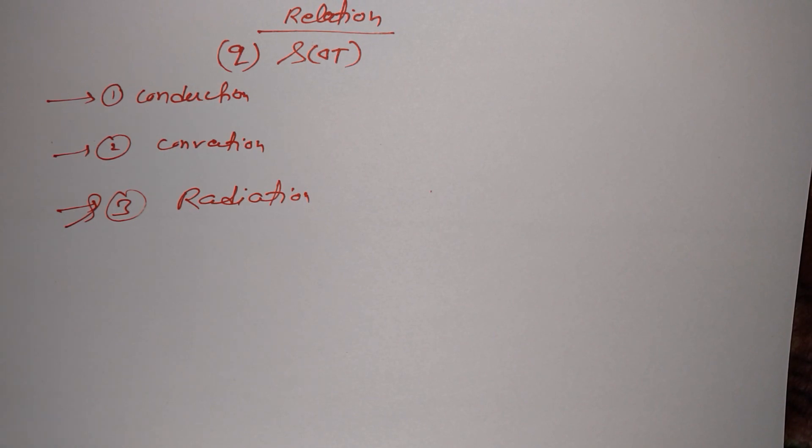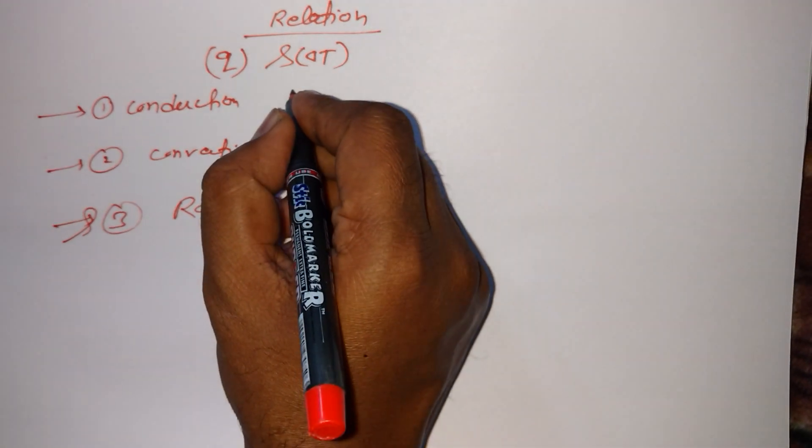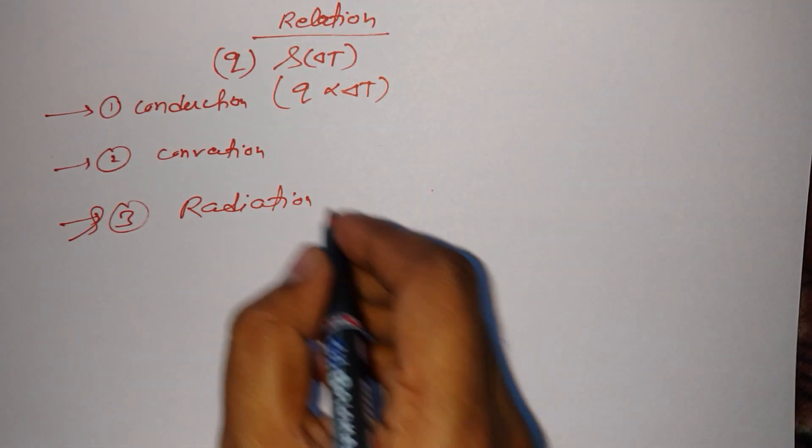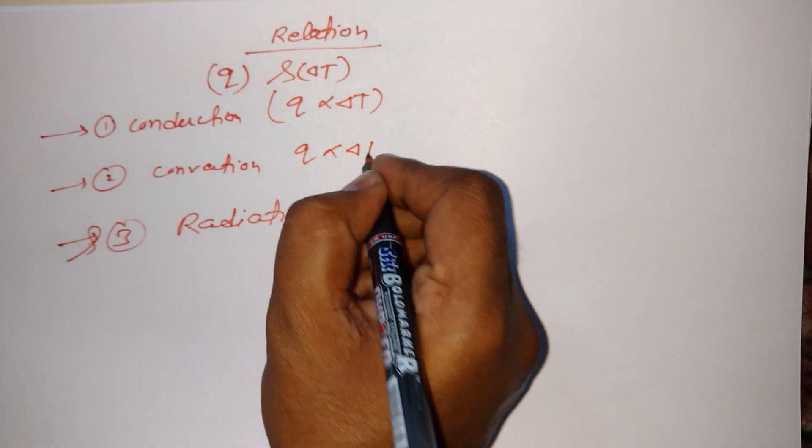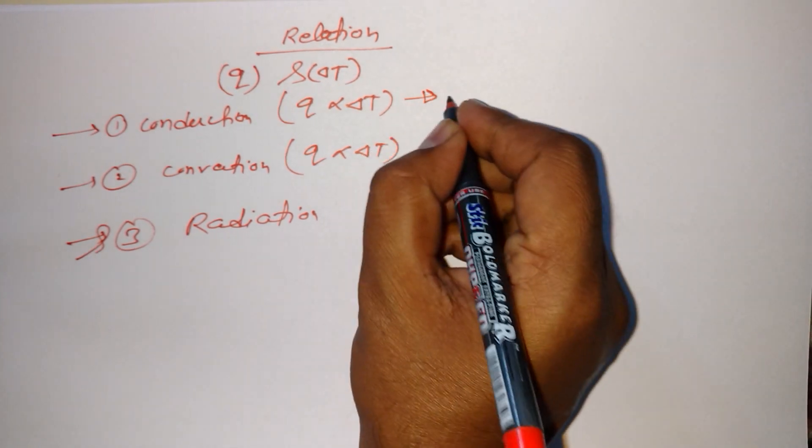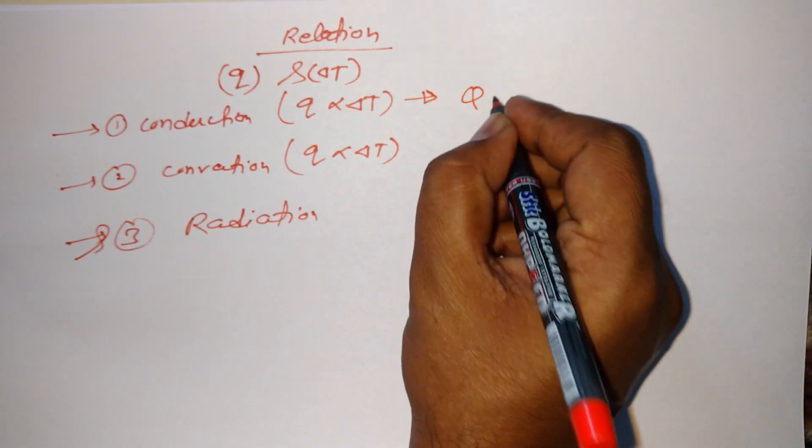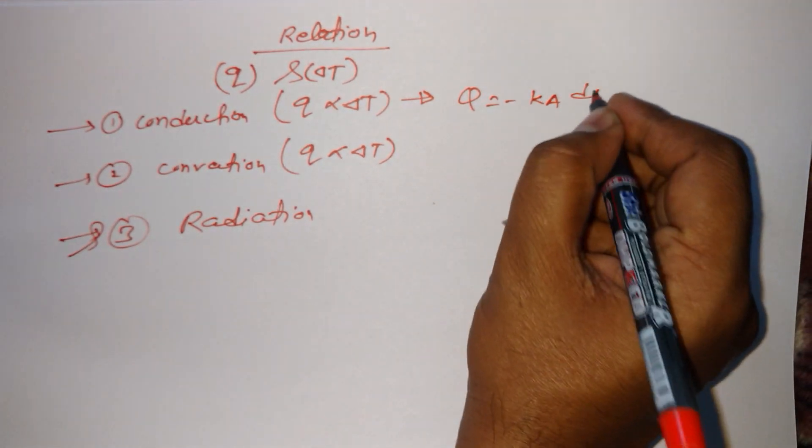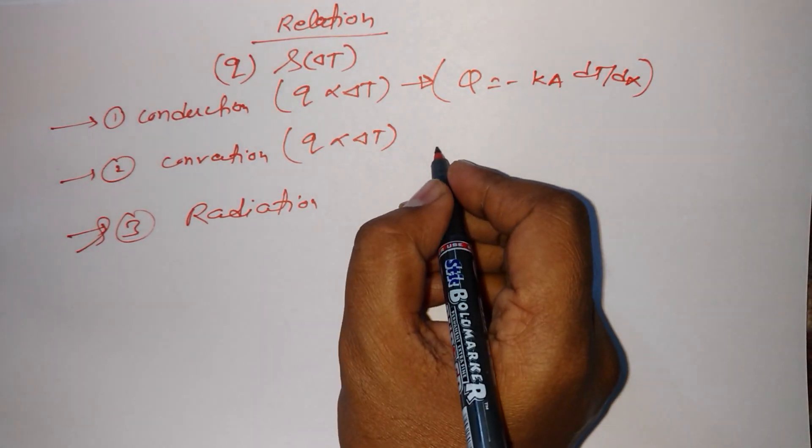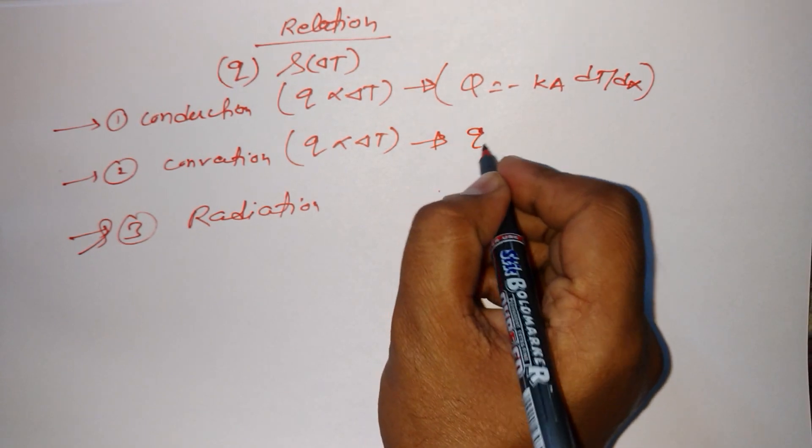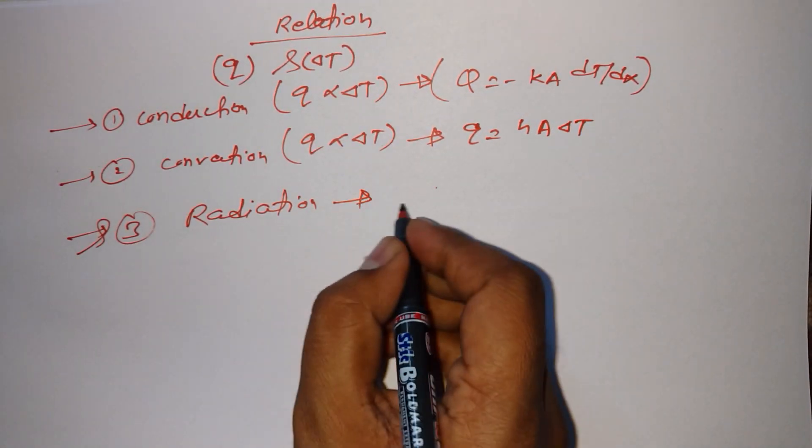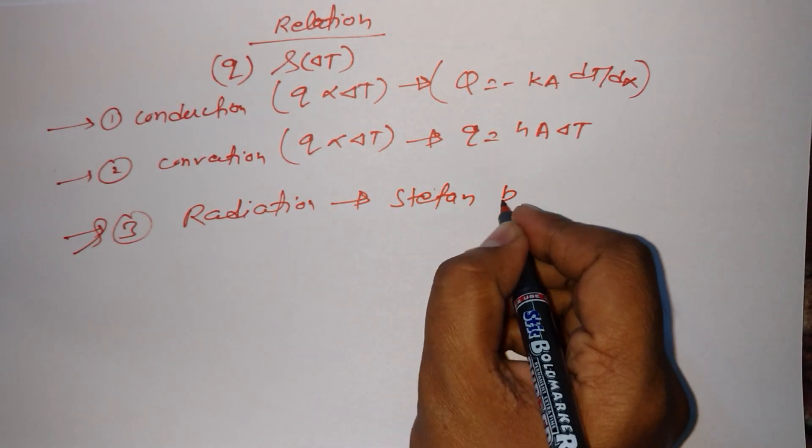So let's go for it. In case of conduction, we have Fourier's law: Q equals minus k A dT upon dx. In convection, we have Newton's law of cooling: Q equals h A delta T. In radiation, we have Stefan-Boltzmann law.